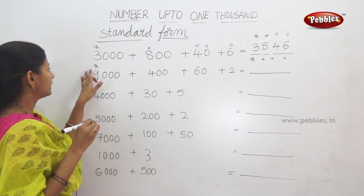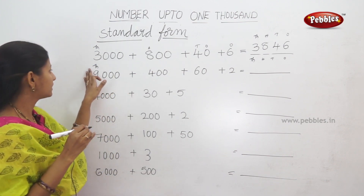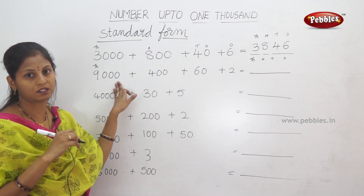So, this is 9. Place value: 9000 place is 9000. 9000 place is 9000.